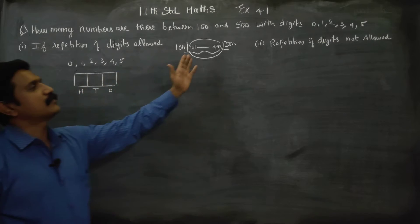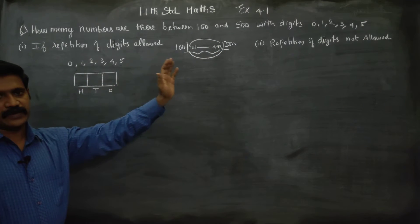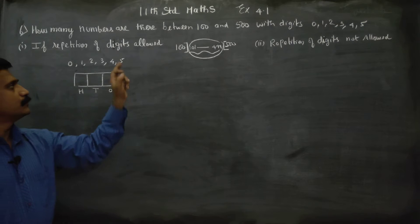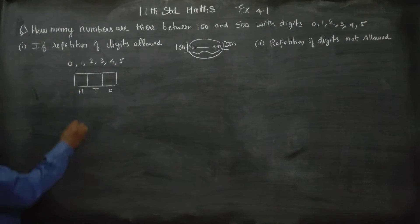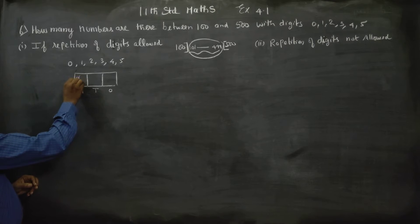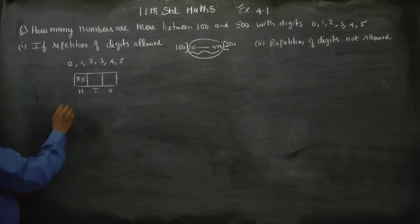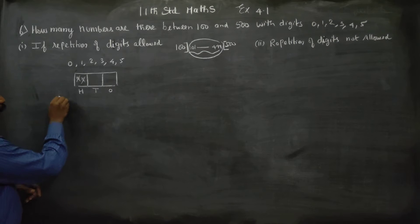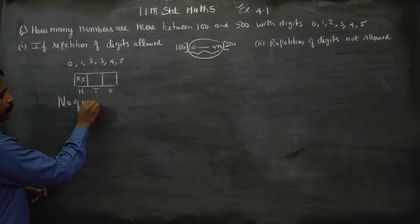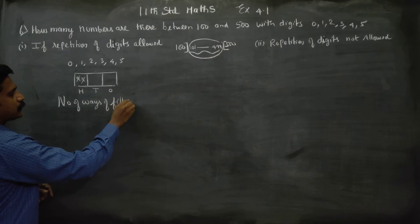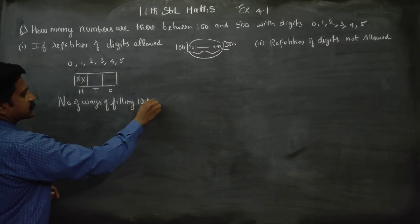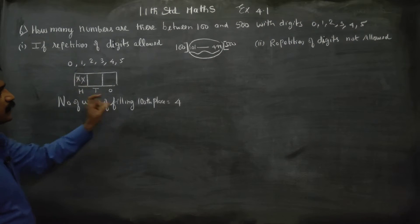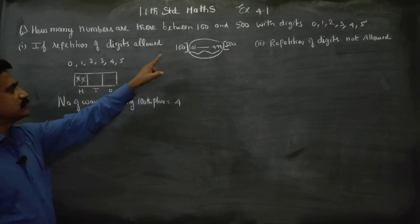5 is more than 500, so 500 and numbers more than 500 are not allowed. Also, 0 would make it a 2-digit number. Therefore, the 100th place can be filled in only 4 ways: 1, 2, 3, 4. 5 is not allowed, and 0 is not allowed.